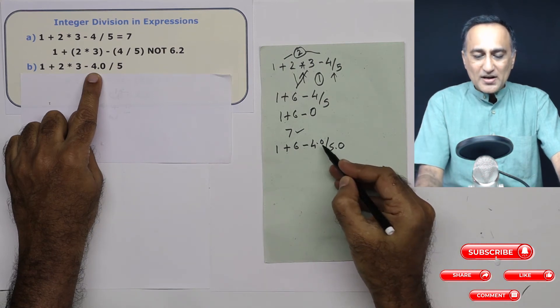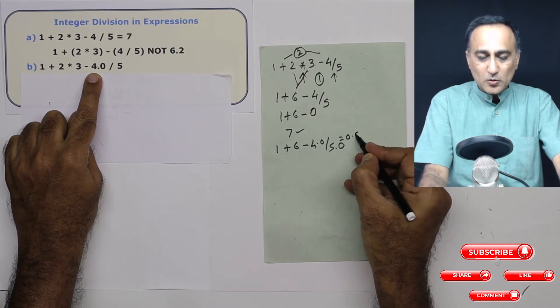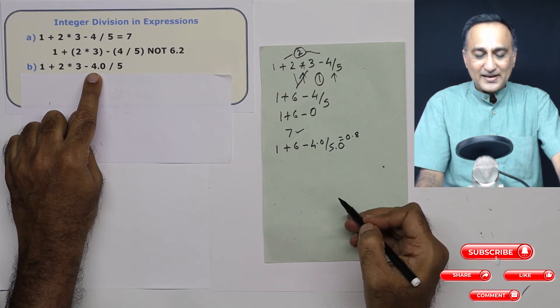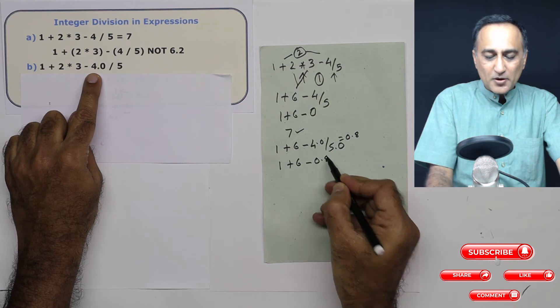So now when this is divided by this, what is going to happen is it's going to be 4.0 divided by 5 is going to be 0.8.